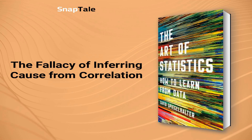The fallacy of inferring cause from correlation. The idea that correlation does not imply causation may have become cliché among statisticians, but the fallacy is still rampant in the media and public. This leads to amusing headlines such as 'Why Going to University Increases the Risk of Getting a Brain Tumor.' While the study found a larger proportion of those with brain tumors were from a higher socioeconomic background, it did not establish a causal link. Correlation could be explained by coincidence, reverse causation, or a lurking factor not accounted for in the study.